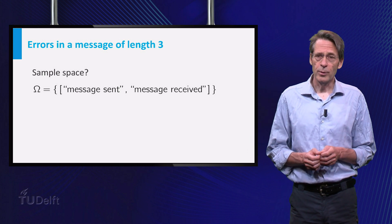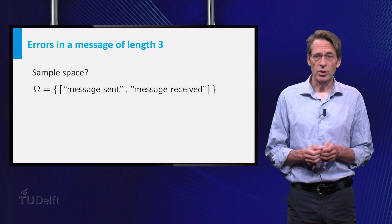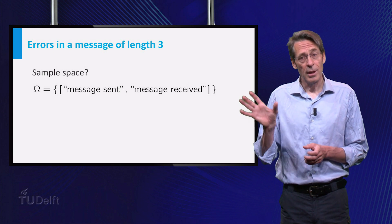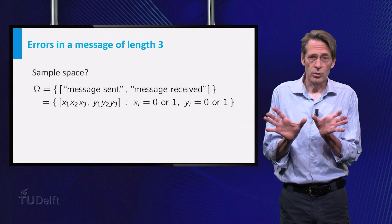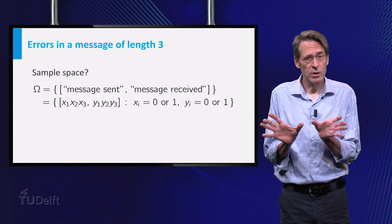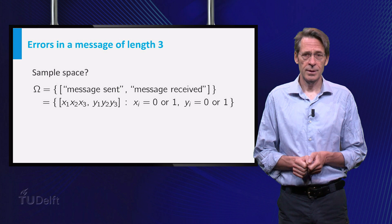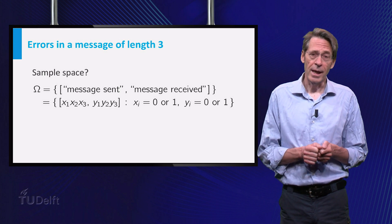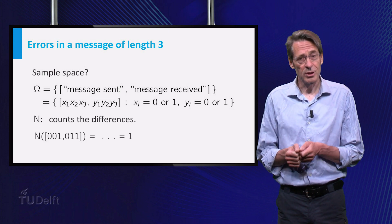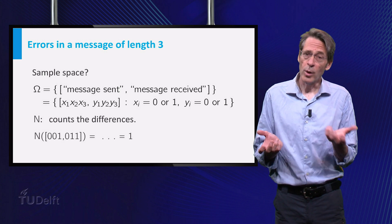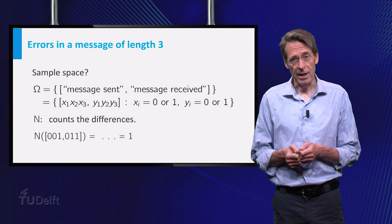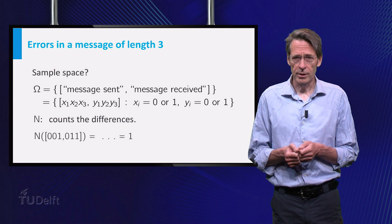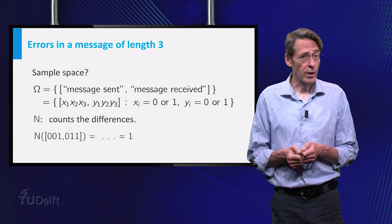The most direct way is to let the sample space consist of all combinations message sent versus message received, so it basically contains all bit sequences of length 6. Then for each outcome N becomes the number of differences between the xi and the yi. Note that this sample space has 2 to the power 6 elements, so to find probabilities we would have to do quite a lot of counting.